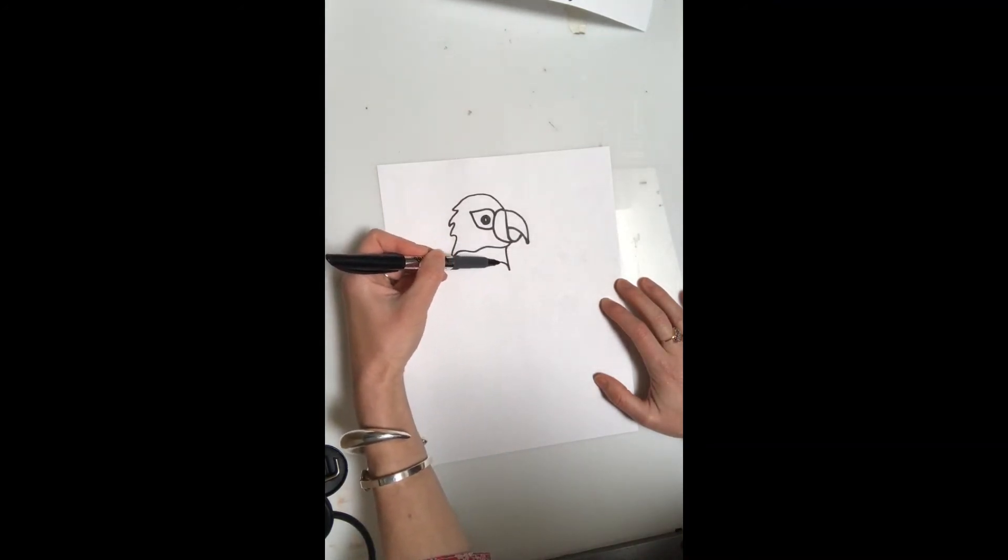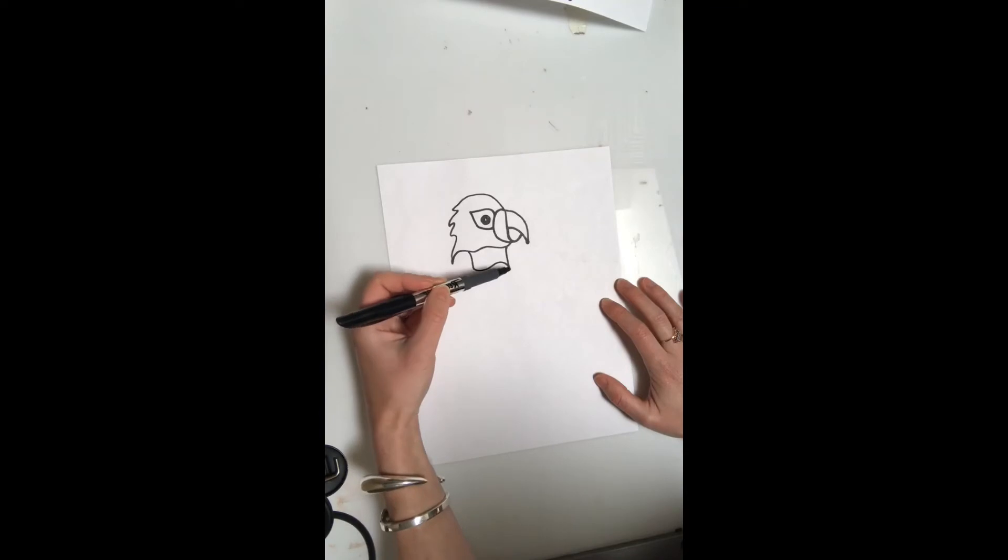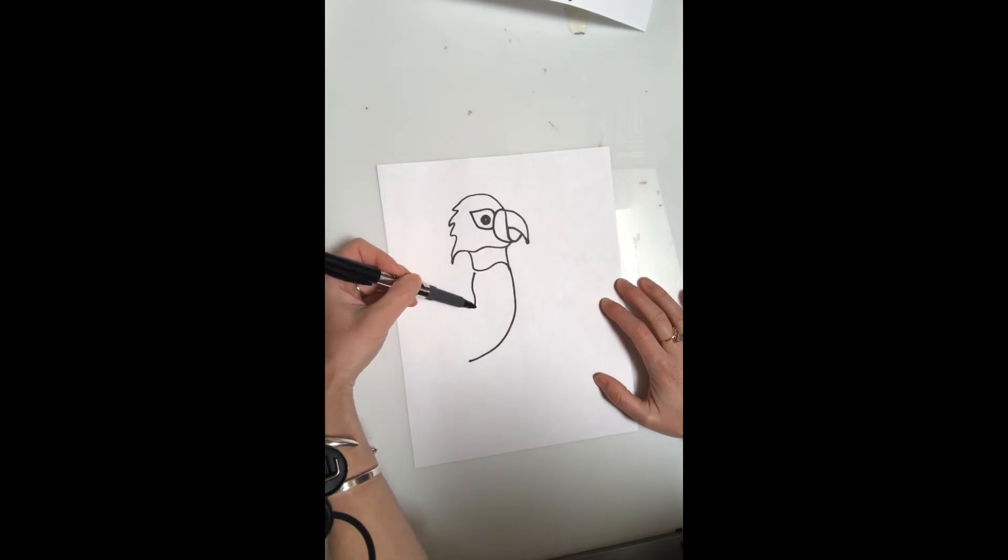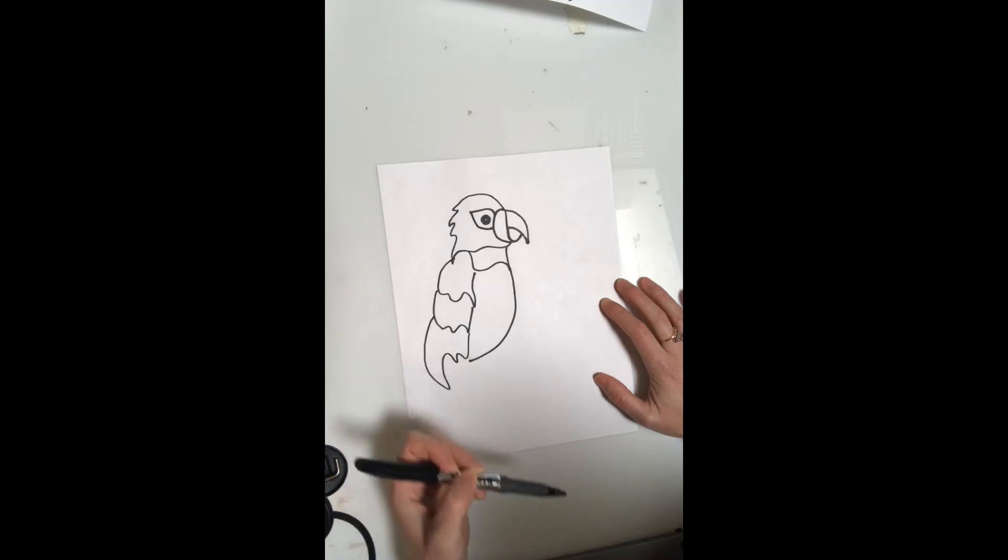Now I'm going to work on the body and I'm creating some blocks of color here, making a curved stomach, and then on the back just a few rows of feathers, just keeping it simple.